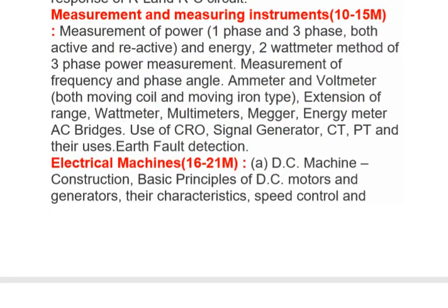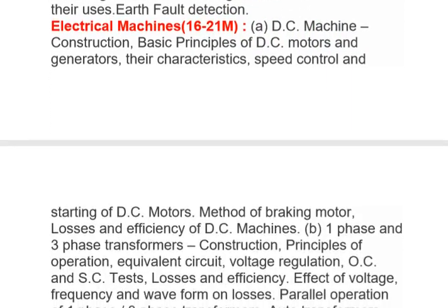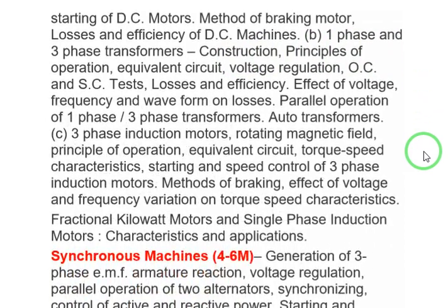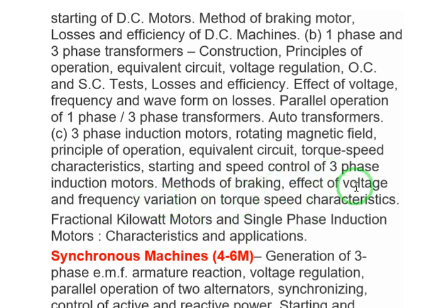Electrical Machines carries a weight of 16 to 21 marks. Major topics are DC machines, transformers, auto-transformers, three-phase induction motors, and fractional kilowatt motors. Important topics include braking methods and braking current — remember the relevant formulas for circuit breakers and braking current.